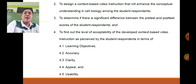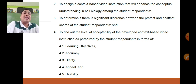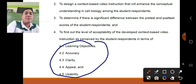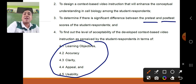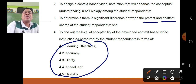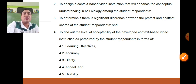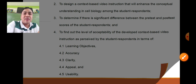In writing your research questions or statement of the problem, it includes different variables — learning objectives, accuracy, clarity, appeal, and usability of the video lesson, along with pretest and posttest scores. It consists of questions that need to be answered and serves as your direction. Without research questions, your research has no direction.